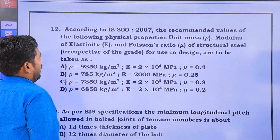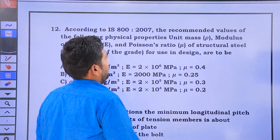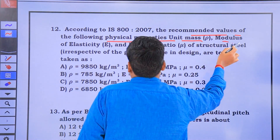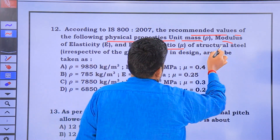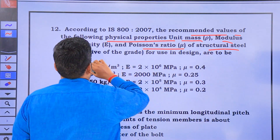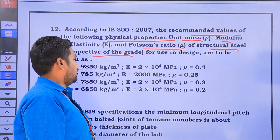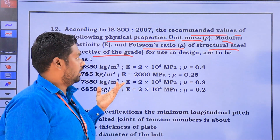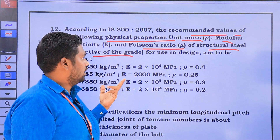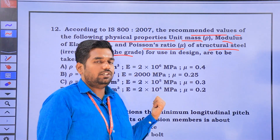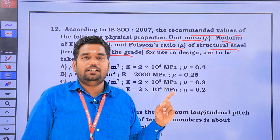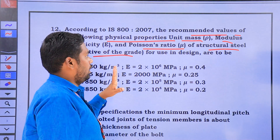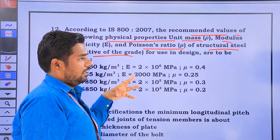According to IS 800-2007, the recommended values of the following physical properties — unit mass, modulus of elasticity, and Poisson's ratio — for structural steel irrespective of grade used in design are: unit mass = 7850 kg/m³, modulus of elasticity = 2×10⁵ N/mm², and Poisson's ratio μ = 0.3.